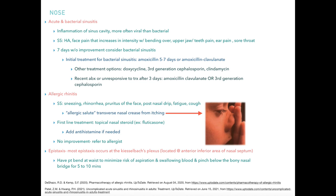Allergic rhinitis symptoms include sneezing, rhinorrhea, pruritus of the face, lots of itching, post-nasal drip, fatigue, and cough. The allergic salute — a transverse nasal crease from repeatedly rubbing the nose upward — is a sign of allergic rhinitis. First-line treatment is topical nasal steroids, for example fluticasone, which are available over the counter. If symptoms don't improve, add an antihistamine. If there is no improvement with treatment at all, refer to an allergist.